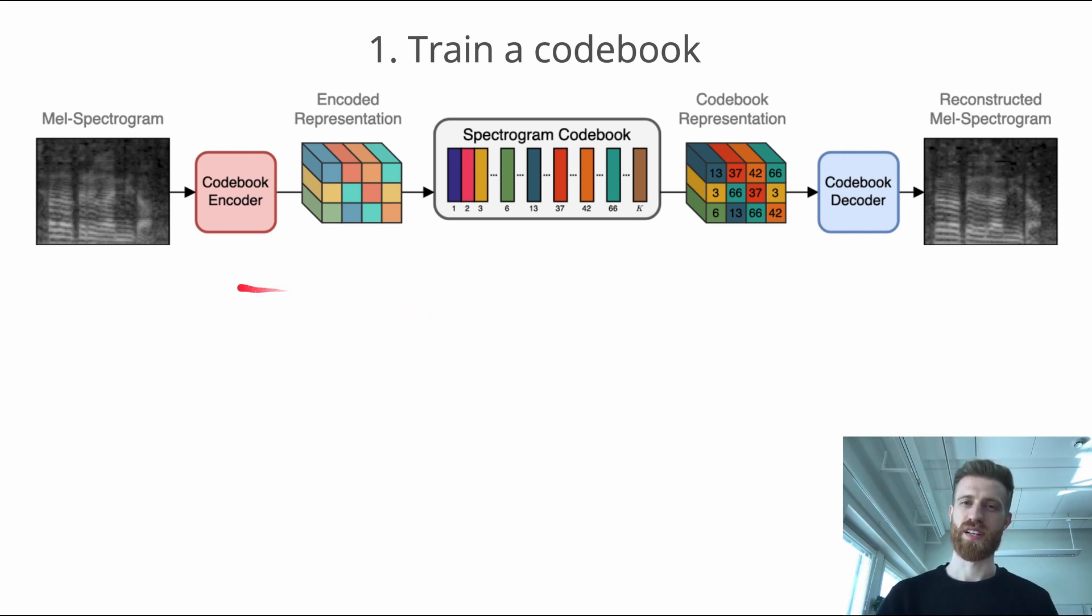First, we train an autoencoder model that could efficiently encode a sound spectrogram into a small resolution feature representation. This feature representation is quantized with the codebook vectors that are trained alongside. Then we can upsample the quantized representation into a reconstructed spectrogram. For this, we use a variant of VQAE called VQGAN.